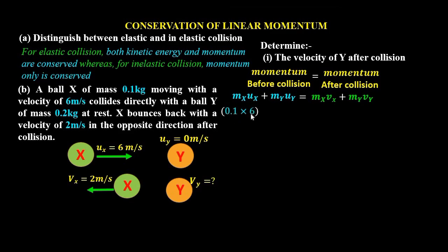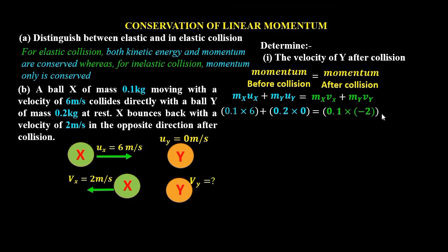Substituting into the equation: mass of X is 0.1 and its velocity is 6 meters per second, plus mass of Y which is 0.2 times its velocity of 0 (at rest). This equals mass of X times its post-collision velocity of 2 meters per second, but because it bounces back in the opposite direction, we use negative 2 meters per second, plus mass of Y times Vy, which is what we are looking for.